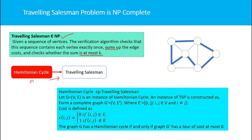The Hamiltonian Cycle problem and Traveling Salesman Problem are almost the same. A Hamiltonian cycle contains every vertex of the graph; in TSP, the salesman also travels to every vertex and comes back to the starting point. The difference is TSP has a starting point, while a Hamiltonian cycle, being a cycle, does not have a starting point.